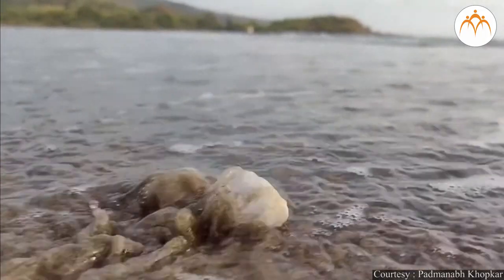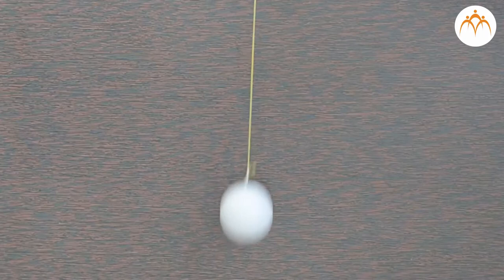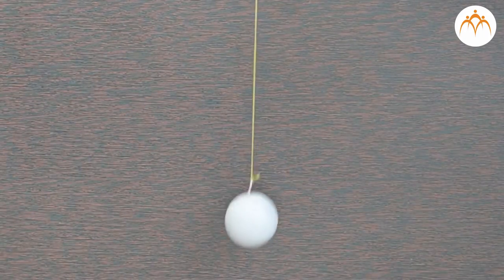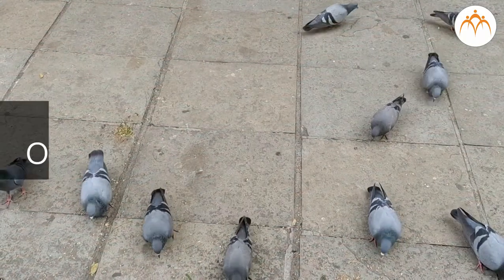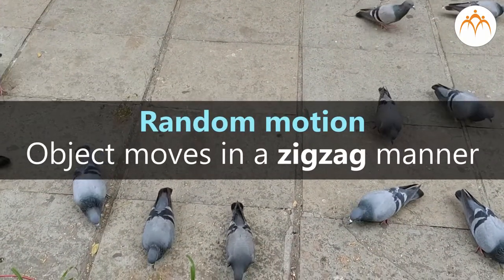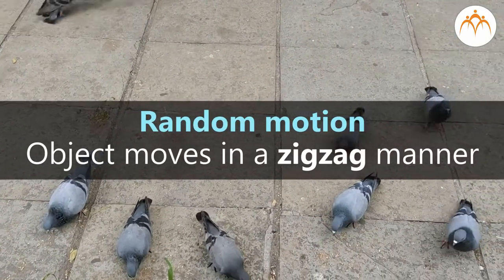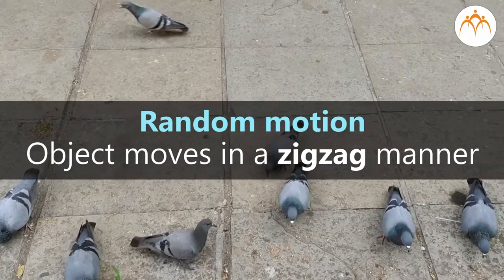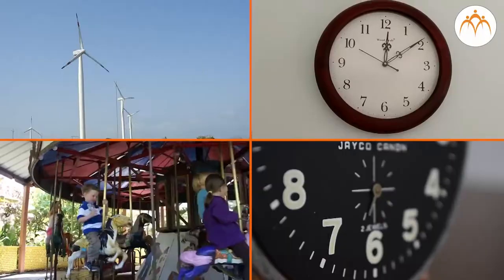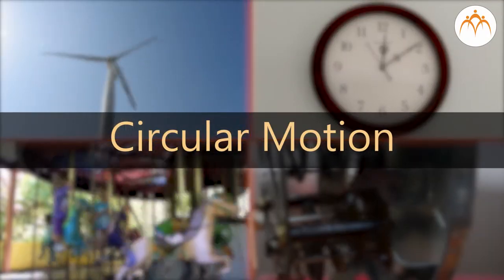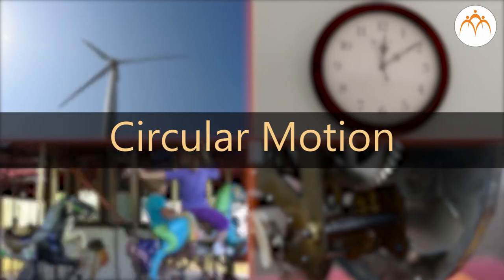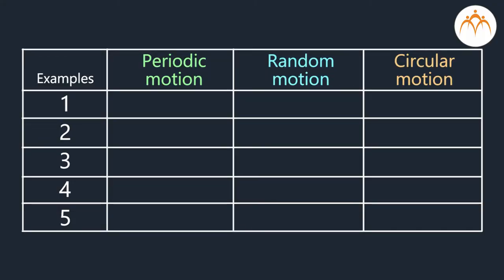Summary: Motion is everywhere. The motion which is regular and repeating is called periodic motion. Random motion is a motion in which an object does not go in a straight manner — the object moves in a zigzag manner. Motion in a circle is called circular motion. Create a chart of motions with definitions and examples of each.